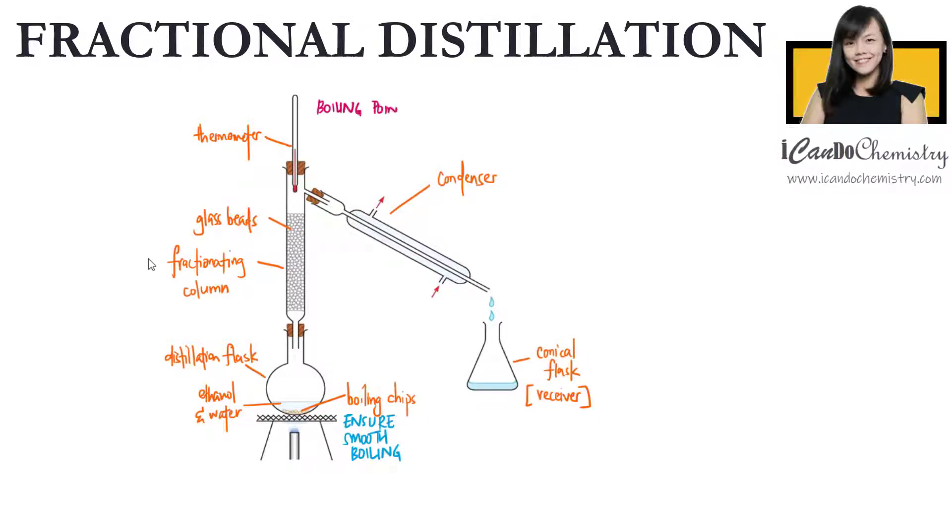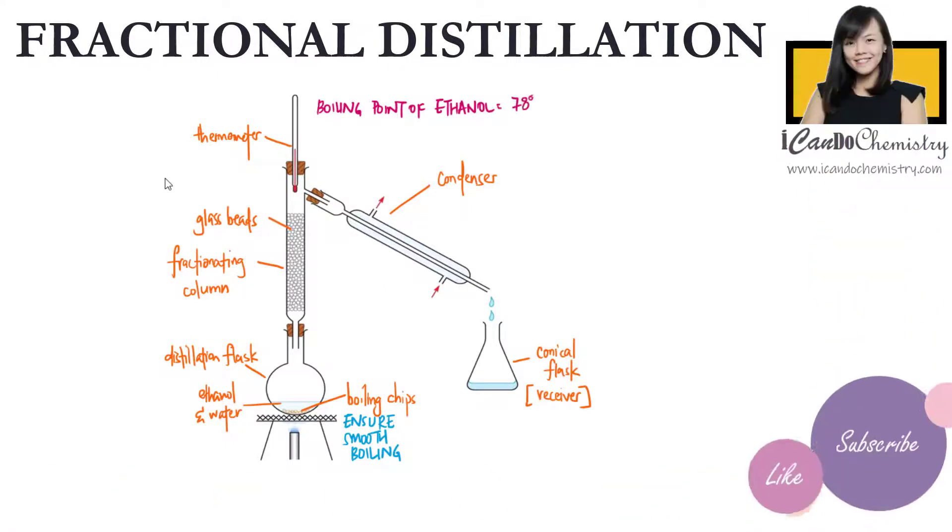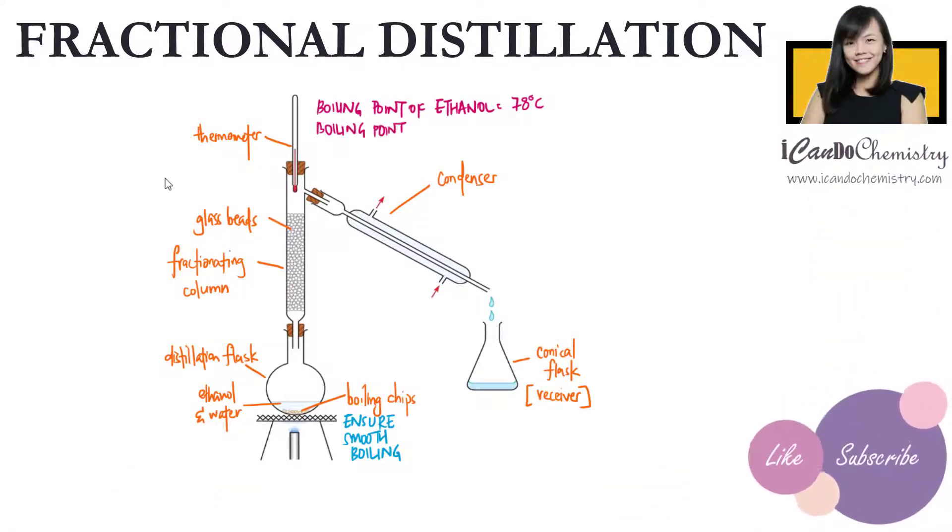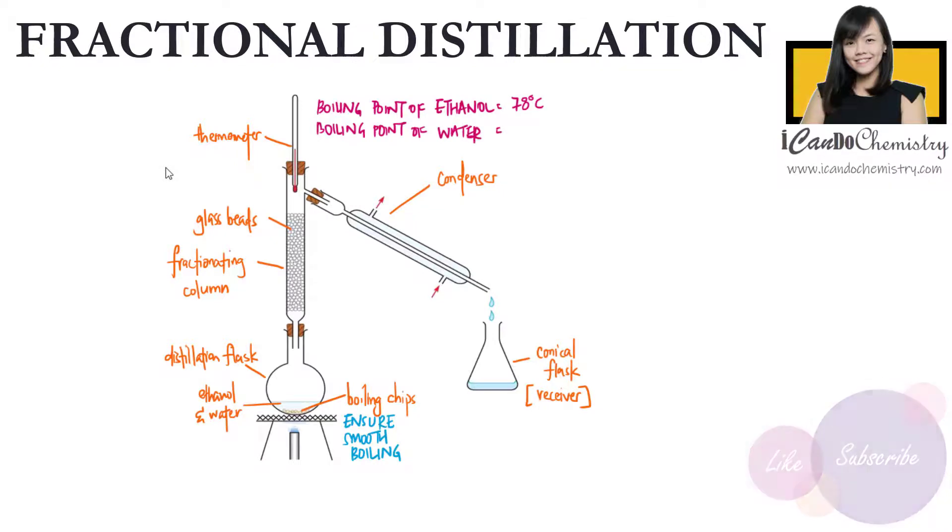The boiling point of ethanol is 78 degrees Celsius, while that of water is 100 degrees Celsius. So ethanol has a lower boiling point. When the mixture is heated, both liquids evaporate, but ethanol will boil before water.